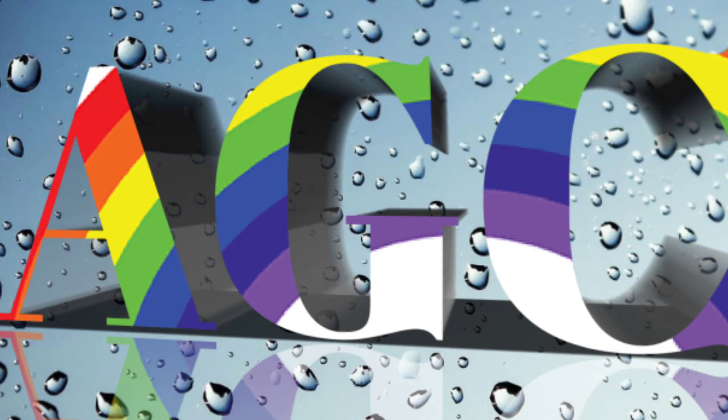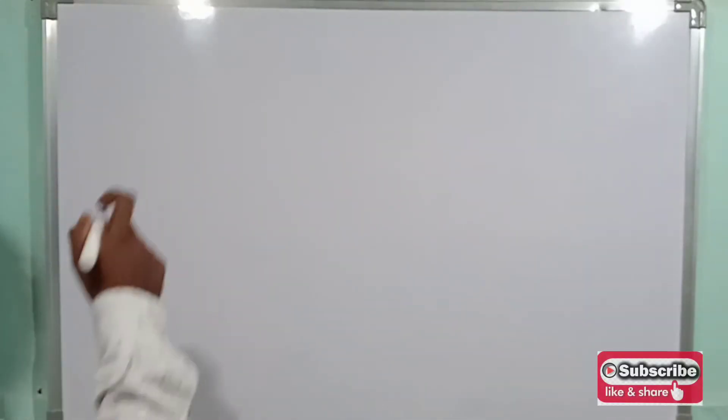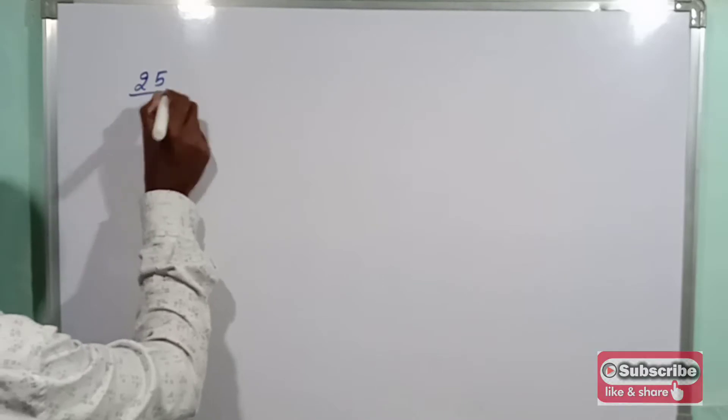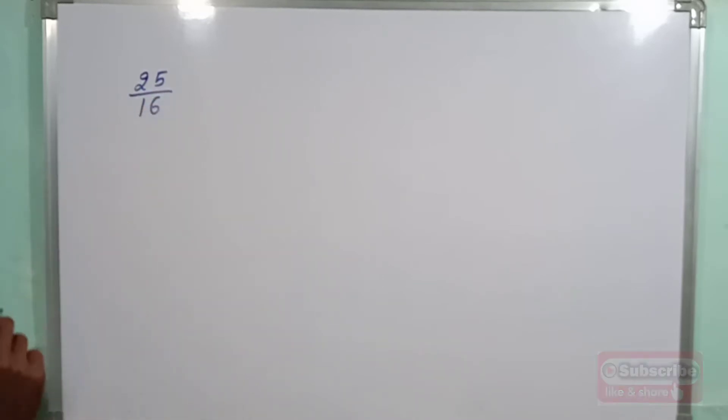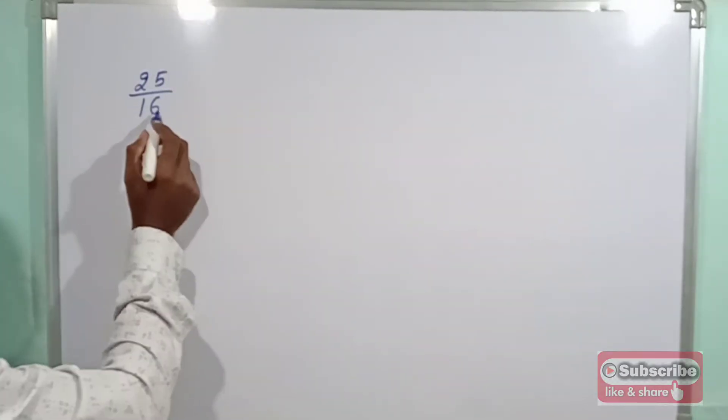In this class I am going to explain decimal representation of rational numbers. A rational number is a number written in p by q form where q is not equal to zero. Let us consider one example: 25 by 16. This is a rational number, and we have to represent 25 by 16 in decimal form.